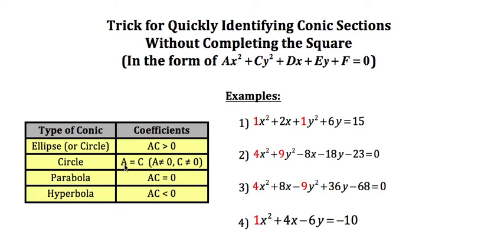With it being either an ellipse or a circle, you do have to now go down and check. When a equals c then you know it is the circle not the ellipse, and one does equal one, so on this first one here I have a circle. Very quickly able to determine that without completing the square.